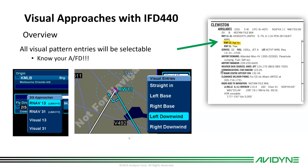When thinking about a visual approach, look up your airport in the facilities directory to make sure you know whether they're flying right traffic or left traffic. You can select straight in, left base, right base, left downwind, or right downwind. Visual approaches will appear in the list here if they are enabled.